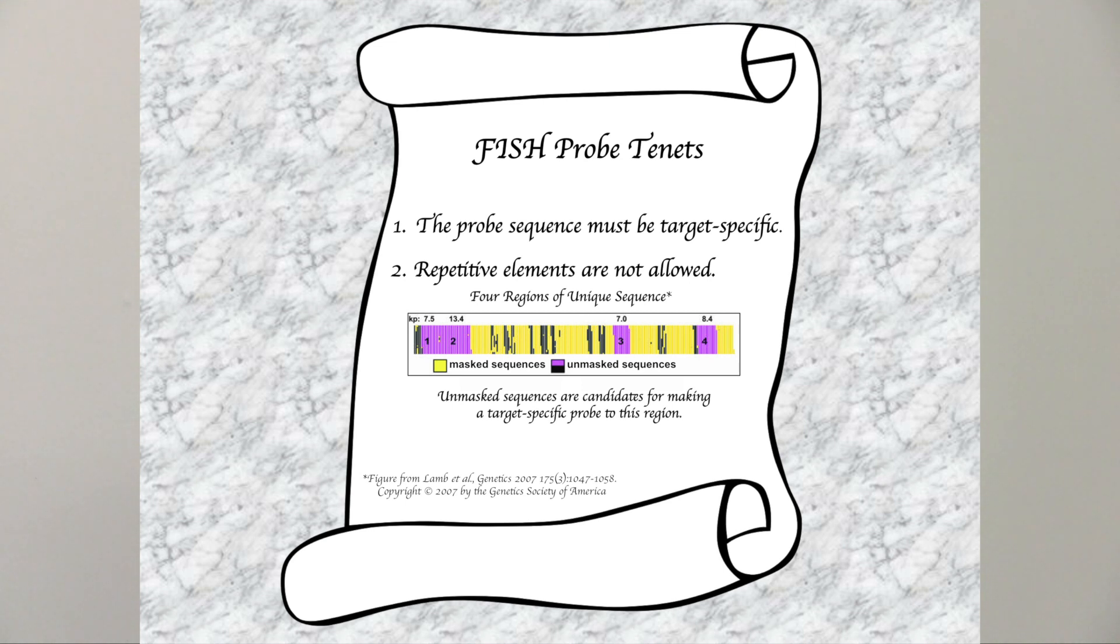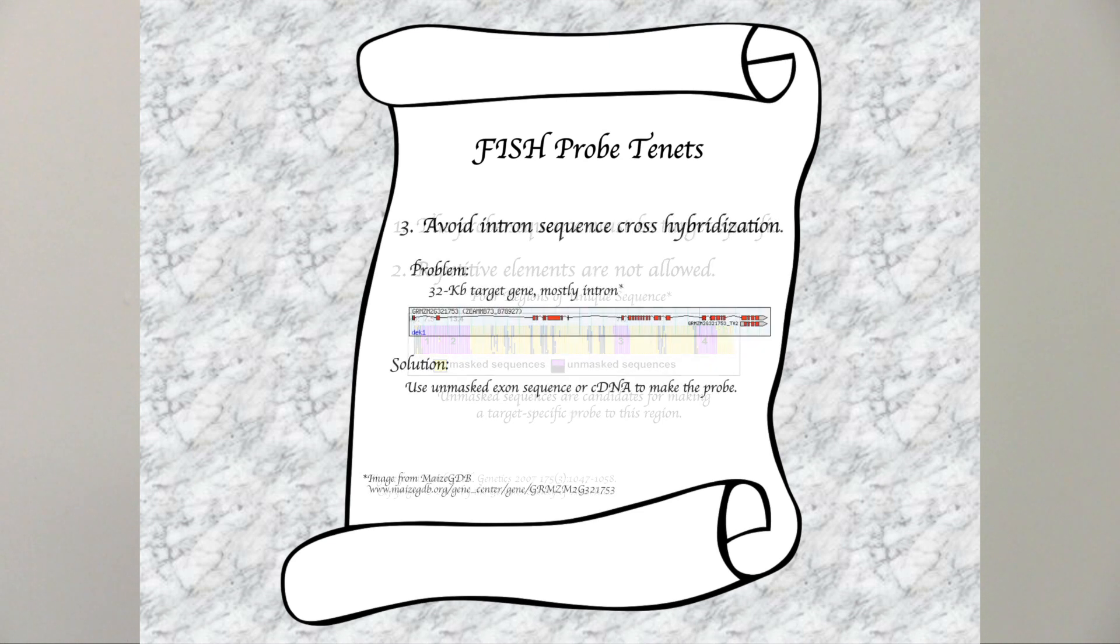Two, make certain that repetitive elements are absent. Use programs designed to identify and locate them. And three, if cross-hybridization of target and non-target intron sequence is a concern, the probe can be made using unmasked exon sequence or cDNA.